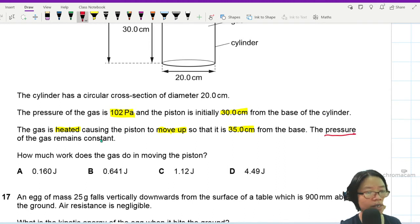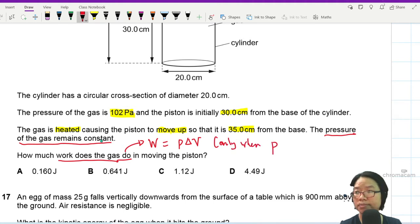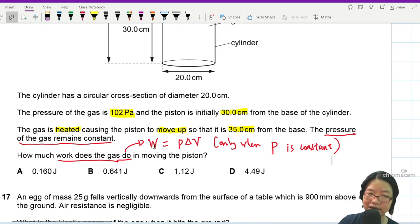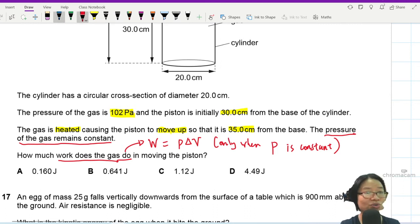This is important because for you to use the equation to find how much work does the gas do when moving the piston, we are going to use the equation work done by the gas is P change in volume. But you can only use this when P is constant. So if you have done the gas chapter in A2, ideal gas chapter 10, I have actually explained in detail that work done is actually an integral. So for you to just multiply, you have to make sure your P is constant. But this is AS. So as long as your P is constant, we can use the equation already.